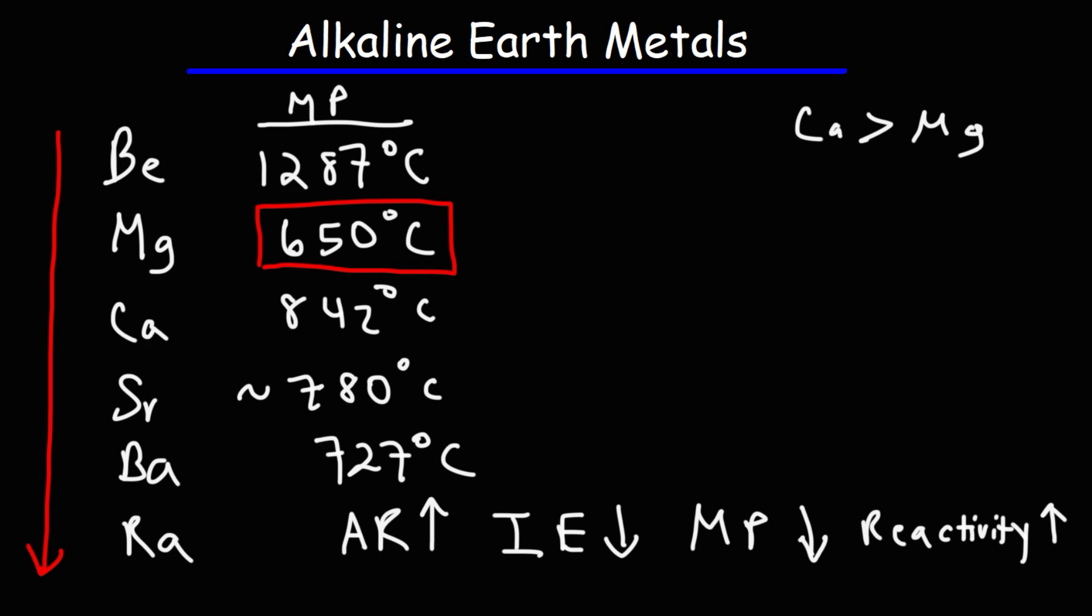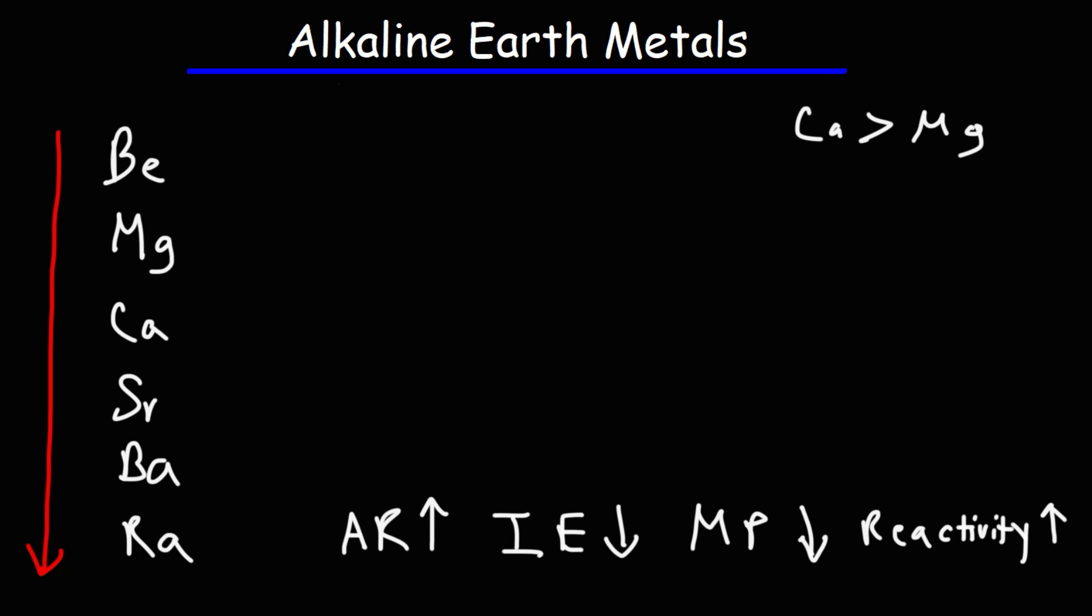You can look up some YouTube videos on the reactions of alkaline earth metals with water. You'll find that when you put magnesium in water at room temperature, it reacts very slowly with water, so slow that you may not even notice any observable reaction. You might see a few bubbles. Calcium reacts faster with water than magnesium. You can observe the reaction.